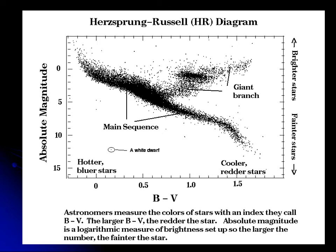I once presented this at a seminar at the University of North Texas, with temperature increasing to the left and magnitudes increasing downward. The department chair questioned it, but that is the normal convention — luminosity increases upward and B minus V increases to the right. Most stars turned out to fall in a diagonal strip across the HR diagram, and we call that the main sequence.